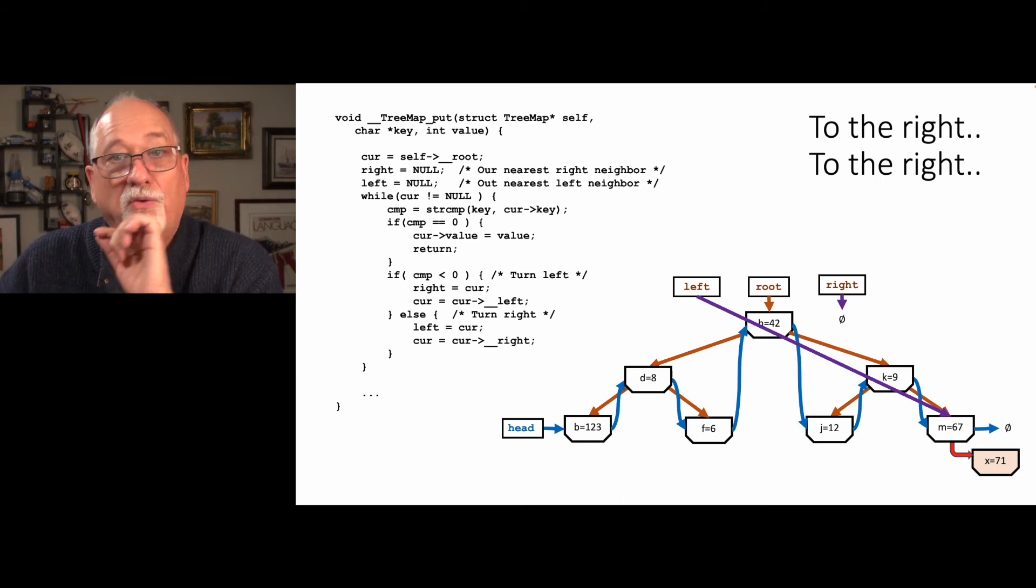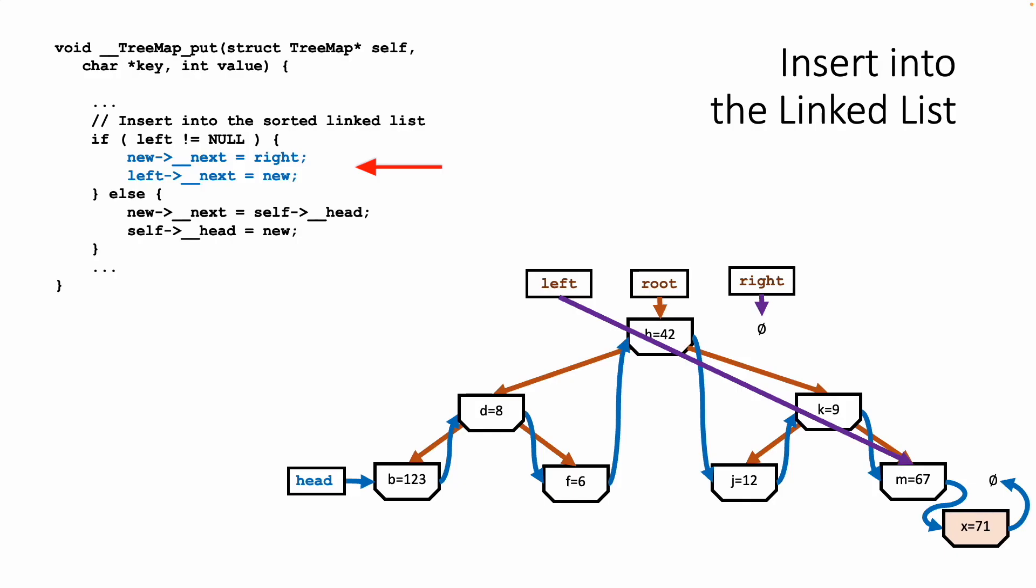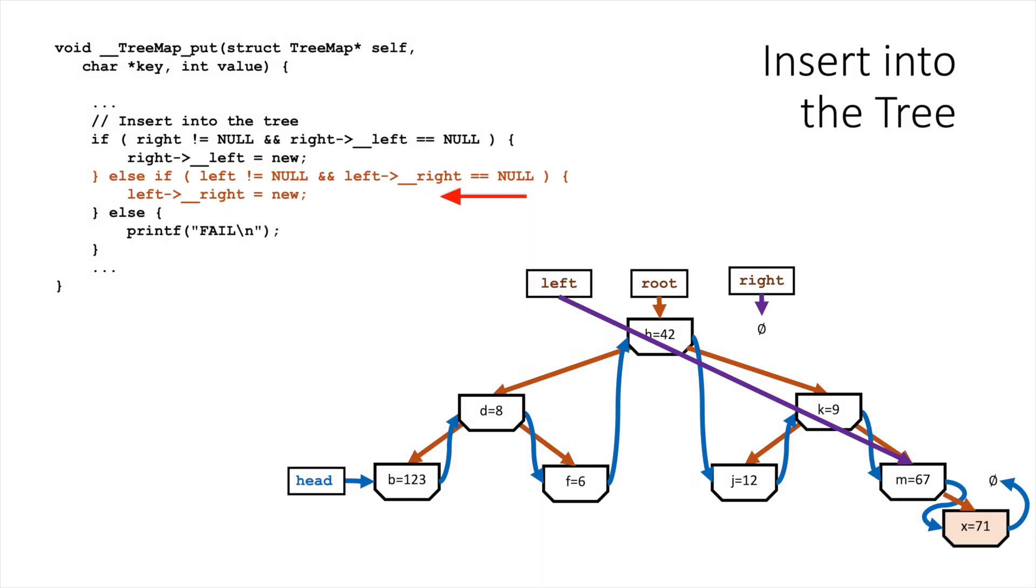And you'll note that the thing we detect here is right equals zero, which means we have no value greater than x in this list. So we just say x next, the current thing of next is null, and the cur next points to the x entry. And then we hook it in on the right side of the m equals 67, and then we are done.